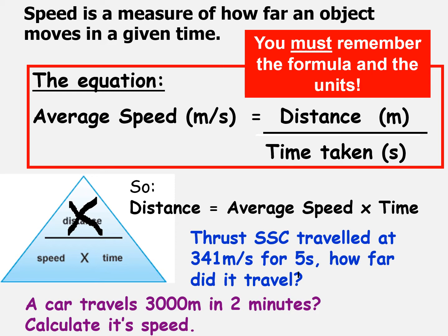Here are the answers. We already knew the speed was 341 m/s, so we multiply: 341 × 5 = 1705 meters in five seconds. For the second question: distance is 3000 meters divided by two minutes — be careful, two minutes is 120 seconds — so 3000 divided by 120 gives us 25 meters per second.